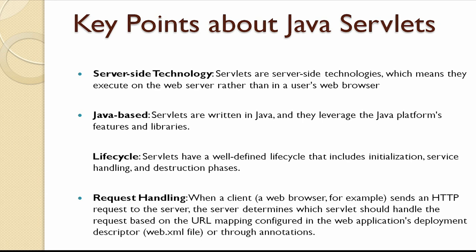When a client, such as a web browser, sends an HTTP request to the server, the server determines which servlet should handle the request based on URL mapping configuration in the web application deployment descriptor web.xml file or through annotations. The servlet container creates an instance of the servlet if not already created and invokes its service method. The service method receives the request and response objects as parameters, and is responsible for processing the request and generating the response.